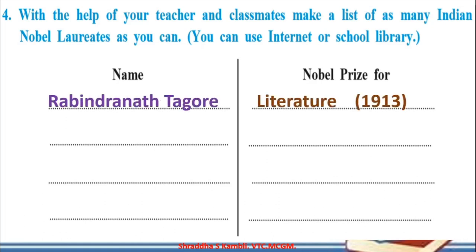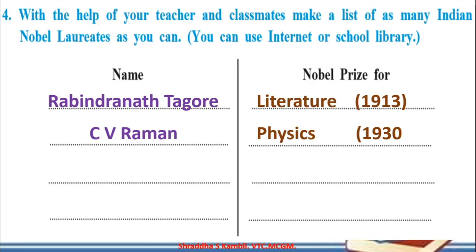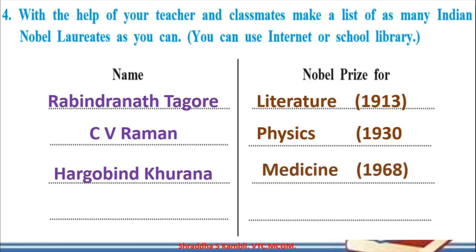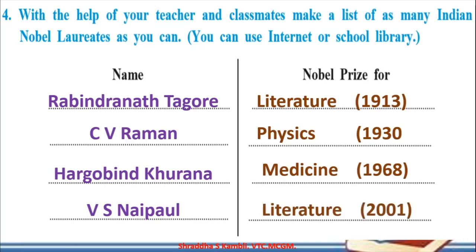Some Indian Nobel laureates include: Rabindranath Tagore, who won the Nobel Prize for literature in 1913; C.V. Raman, who won for physics in 1930; Hargobind Khurana, who won for medicine in 1968; V.S. Naipaul, who won again for literature in 2001; and Amartya Sen, who won for economics. Try and find out how many more people from India have won the Nobel Prize.